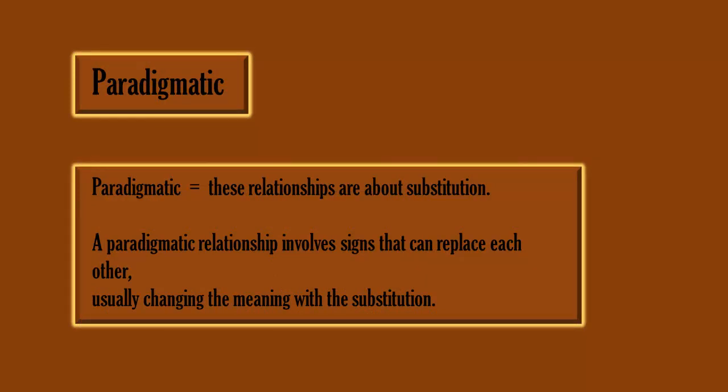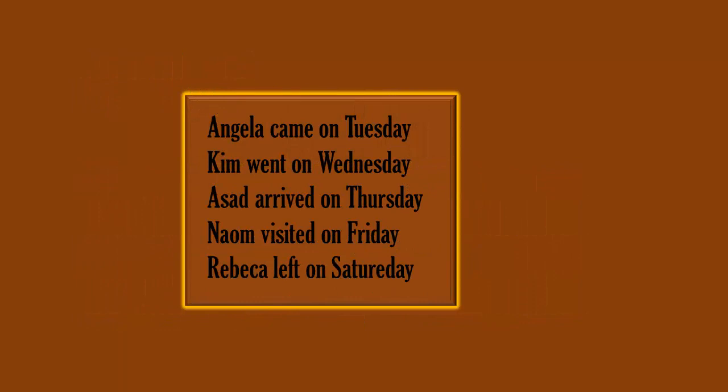A paradigmatic relationship is about substitution. A paradigmatic relationship involves signs that can replace each other, usually changing the meaning with the substitution. A sign is replaced by another sign from the same class of words. For example: 'Angela came on Tuesday,' 'Asad arrived on Thursday,' 'Norm visited on Friday,' 'Rebecca left on Saturday.'